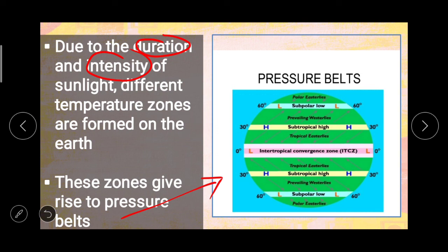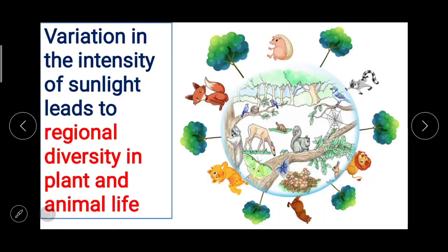As you can see in the image, different temperature zones are formed due to the duration and intensity of sunlight. Variation in the intensity of sunlight leads to regional diversity in plant and animal life. There are many animals and plants, like kangaroos, that exist only in a particular region or country and not in others, and this is because of the variation in the intensity of sunlight.